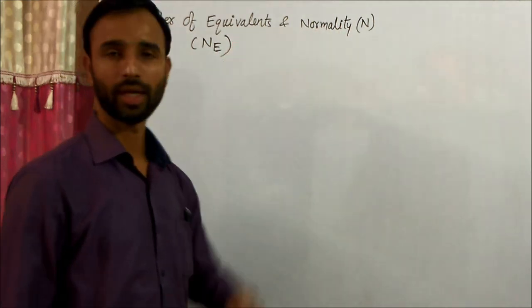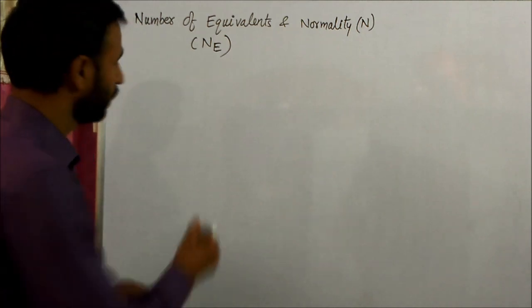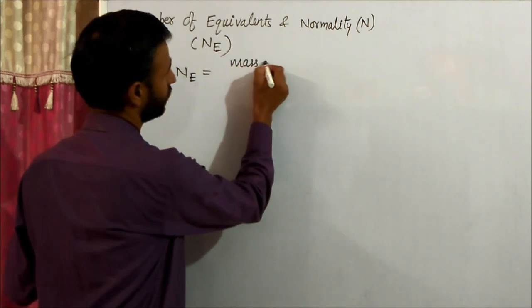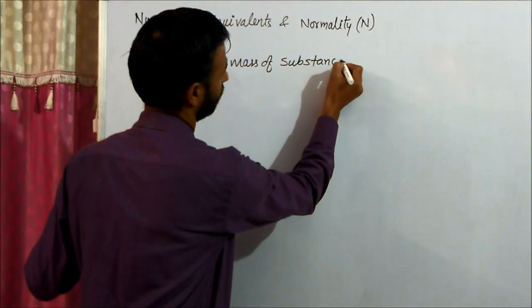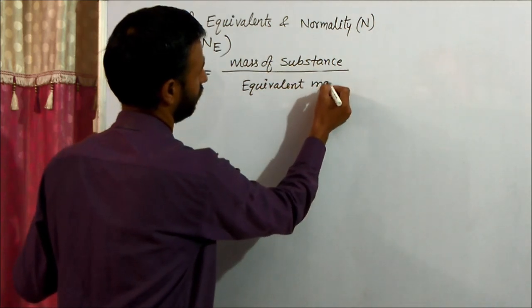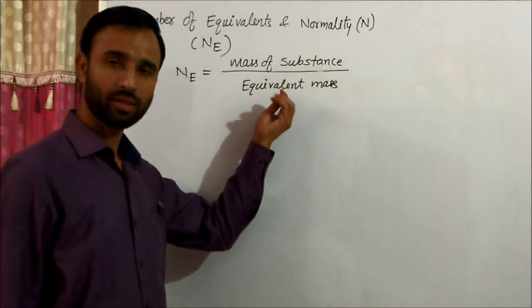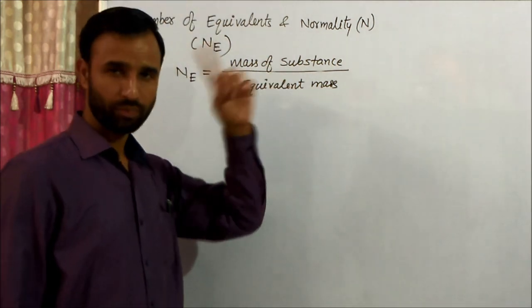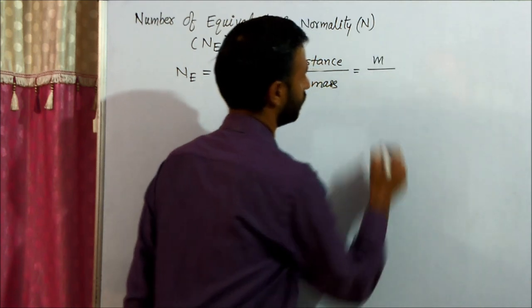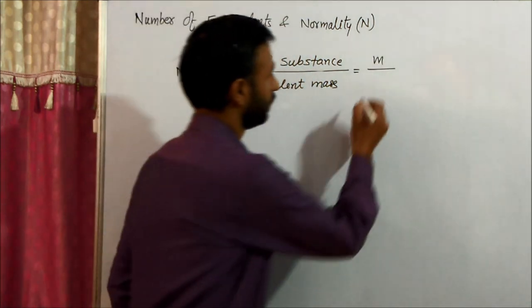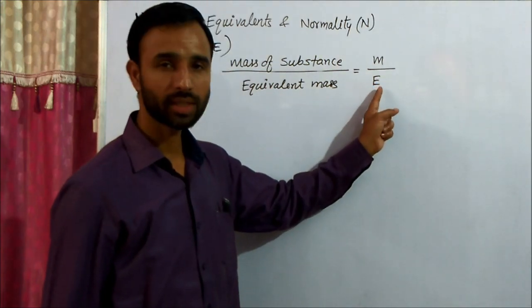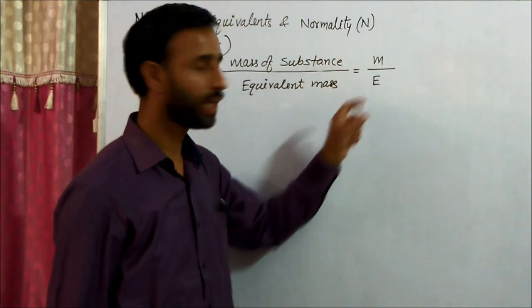Number of equivalents and normality. The number of equivalents is equal to mass of substance divided by its equivalent mass. Equivalent mass we have already discussed in the previous video. Taking equivalent mass as E, you know equivalent mass is molar mass divided by N factor.